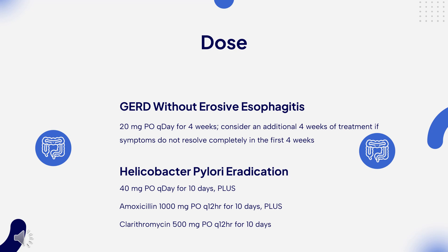Maintenance: 20 mg PO once daily for up to 6 months. Helicobacter pylori eradication — combination therapy for eradication of H. pylori in patients with duodenal ulcer: Esomeprazole 40 mg PO once daily for 10 days, plus amoxicillin 1000 mg PO every 12 hours for 10 days, plus clarithromycin 500 mg PO every 12 hours for 10 days. Risk reduction of NSAID-associated gastric ulcer: 20–40 mg PO once daily for up to 6 months.